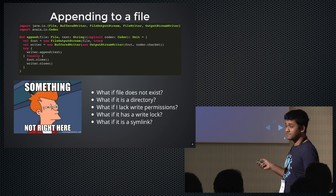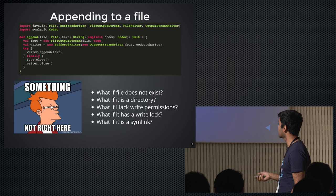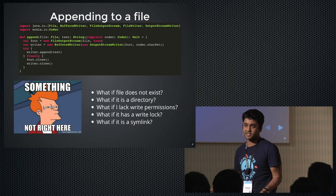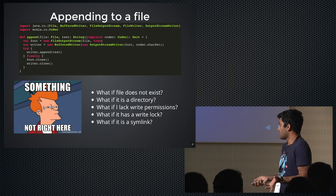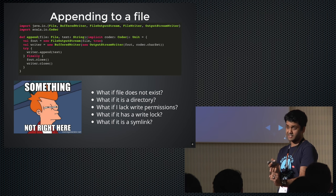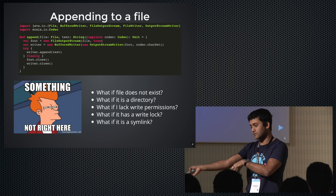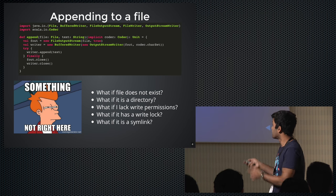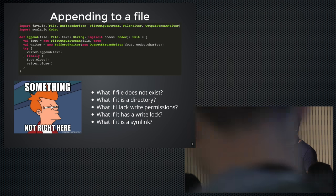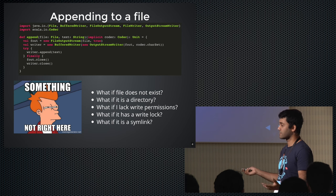There are a lot of things this code doesn't even address. What if the file does not exist — would it create the file and append to it, or would you get an exception? It's not obvious. What if you're writing to a directory, or you don't have permissions? What kind of exceptions are you going to get? And something even basic: if the file is a symlink to another file, would you get an exception or follow the symlink and append to that file? You don't know. This code and this API make none of that obvious.